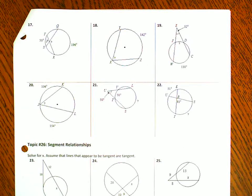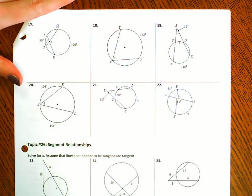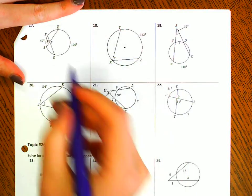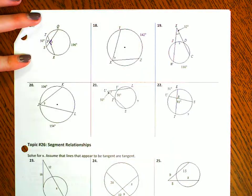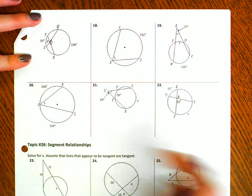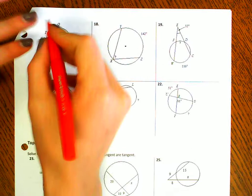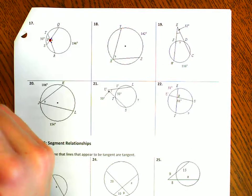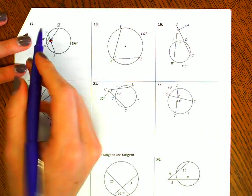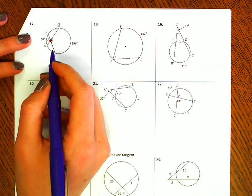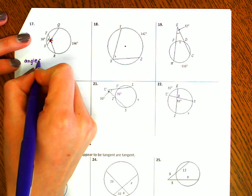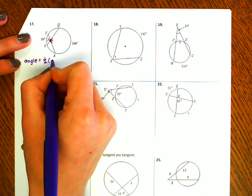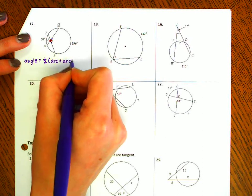Here's page two of the unit 9 review packet. For number 17, we have to solve for this angle right here. Remember, if we're solving for an angle or an arc, it's an on-in-out problem. The vertex for this angle is inside the circle, so we use angle equals one half arc plus arc.